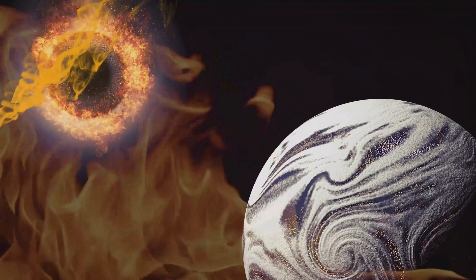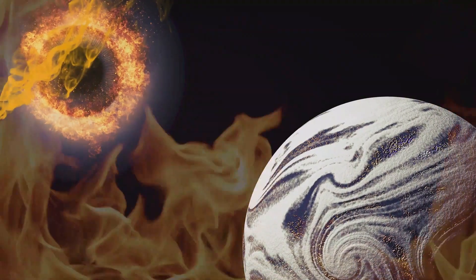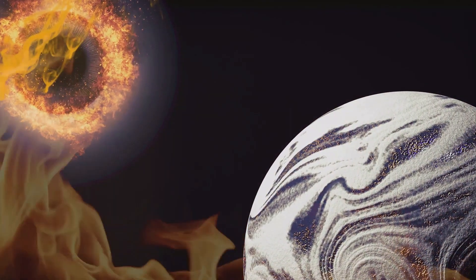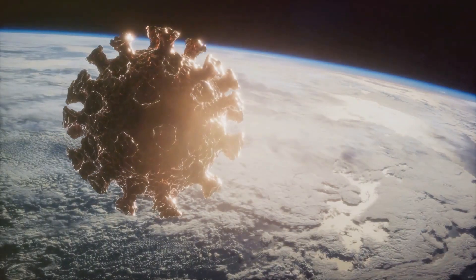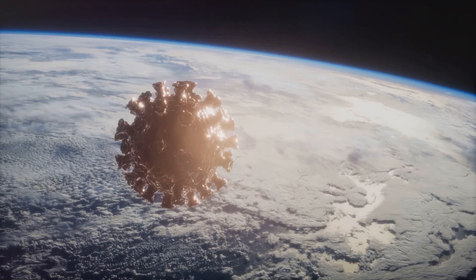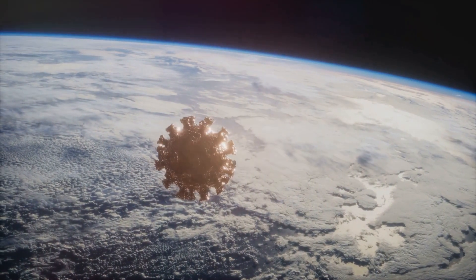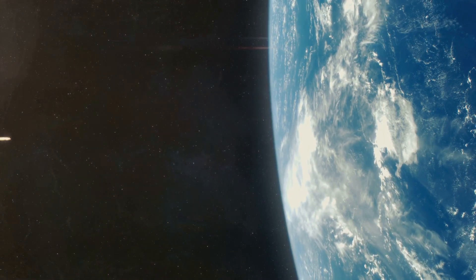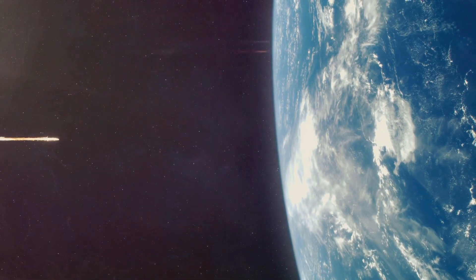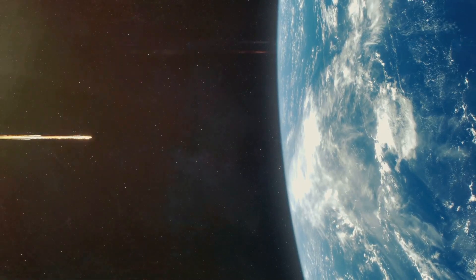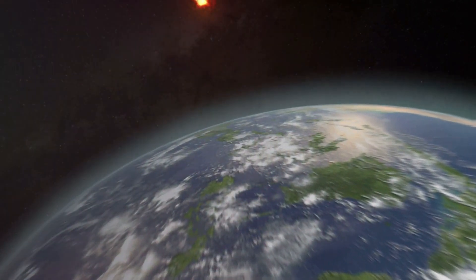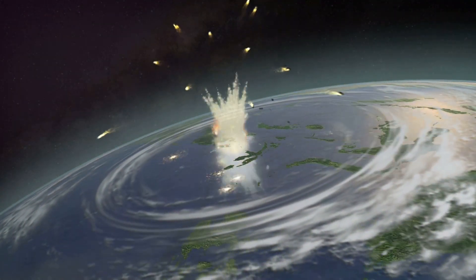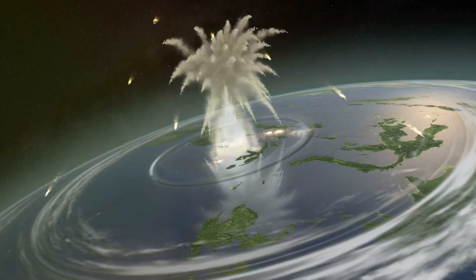Imagine it's April 2029. Apophis, this colossal space rock, is hurtling toward our planet at breakneck speed. If it were to collide with Earth, the impact would release energy equivalent to more than one billion tons of TNT. That's over 65,000 times the power of the atomic bomb dropped on Hiroshima during World War II. The immediate aftermath would be disastrous. The impact site would be obliterated instantly, creating a crater approximately three miles wide and half a mile deep. The shockwave would flatten everything within a radius of 50 miles. Fires ignited by the intense heat would spread rapidly, causing further destruction.